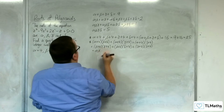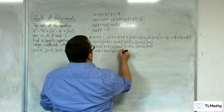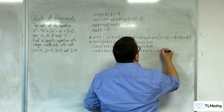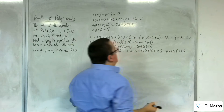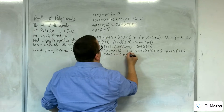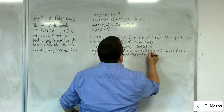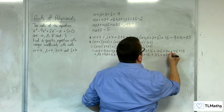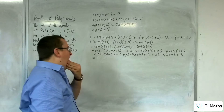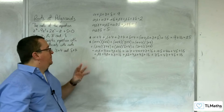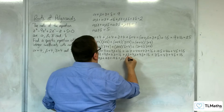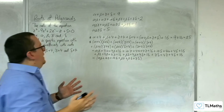Expanding: alpha·beta + 4·alpha + 4·beta + 16, plus alpha·gamma + 4·alpha + 4·gamma + 16, plus beta·gamma + 4·beta + 4·gamma + 16, plus beta·delta + 4·beta + 4·delta + 16, plus gamma·delta + 4·gamma + 4·delta + 16. We don't have any repetitions of alpha·beta, so what we've got is alpha·beta + alpha·gamma + alpha·delta + beta·gamma + beta·delta + gamma·delta. That's six of those.